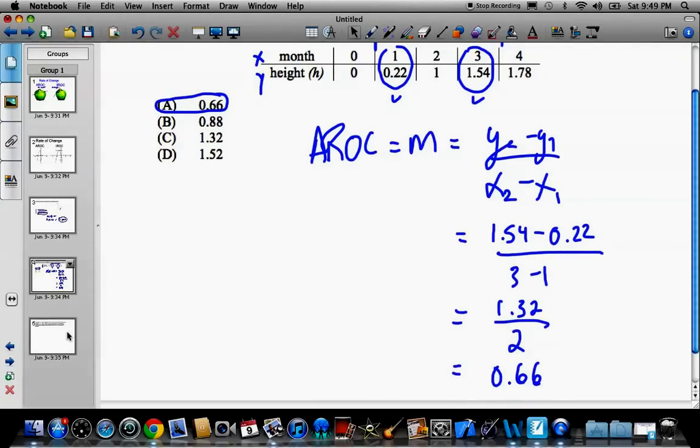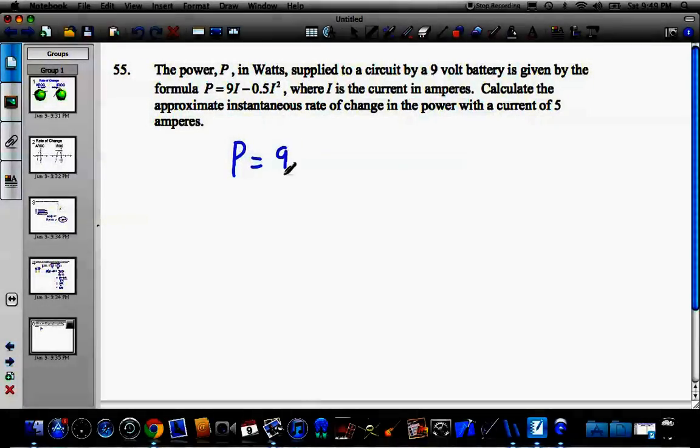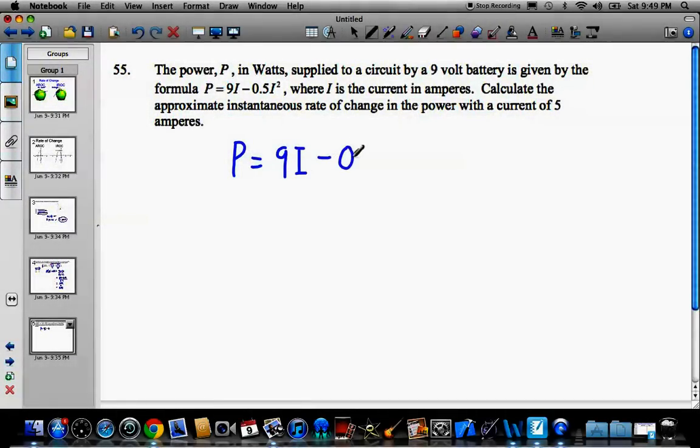Alright, so let's take a look at a long answer question on a public exam. This is another example I pulled from an old public. The power, P, in watts supplied to a circuit by a 9 volt battery is given by the formula here. So don't get confused by all the stuff that's going on here. You have a formula. It's a quadratic equation. Calculate the approximate instantaneous rate of change in the power with a current of 5 amperes. So that means I is equal to 5.